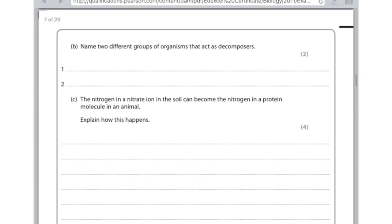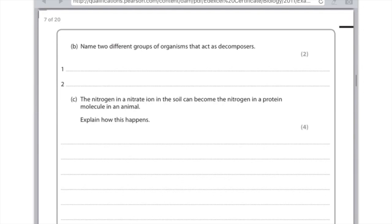And then the protein then gets digested in the animal by protease. So there's lots of available marks here. So first mark, absorption by roots, using active transport for the second mark, used to make amino acids in the plant for the third mark, eaten by an animal for the fourth mark. And then if you're feeling jazzy, you could write that this protein is digested by protease.